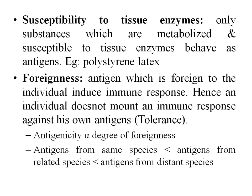Antigenicity is directly proportional to the degree of foreignness — an unrelated antigen is more immunogenic compared to a related antigen. Generally, antigens of the same species are less immunogenic than antigens of a related species, and these are less antigenic compared to antigens from a distant species.